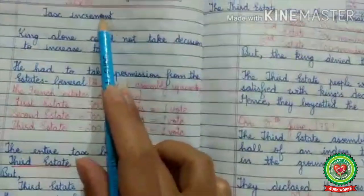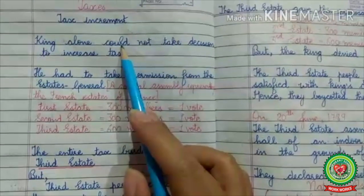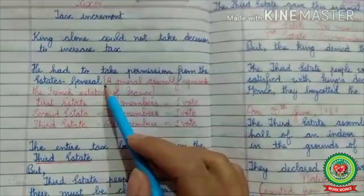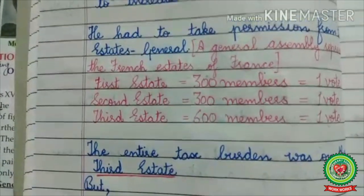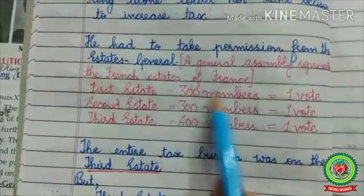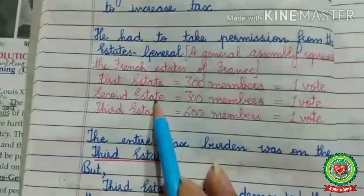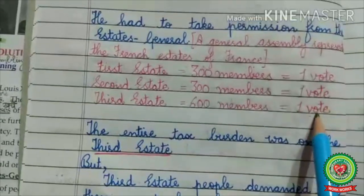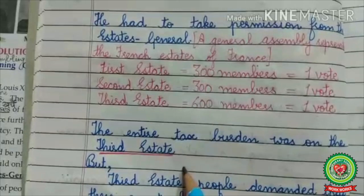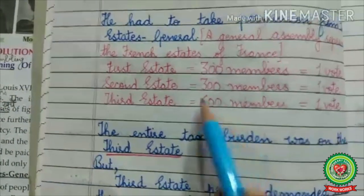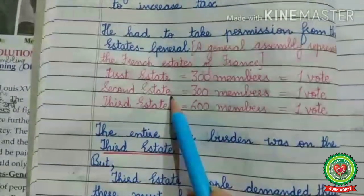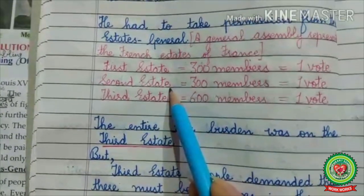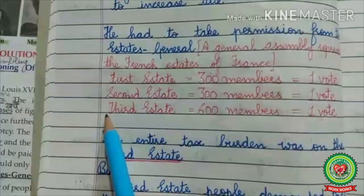The king alone could not take the decision to increase the tax — we had already discussed this — so he had to take permission from the Estates General. The concept was: the first estate had 300 members and one vote; the second estate had 300 members and one vote. That means the entire tax burden was on the third estate. The first and second estates would join hands with the king and pass a motion to increase the tax, while they themselves did not have to pay any amount. So the tax was completely paid by the third estate.